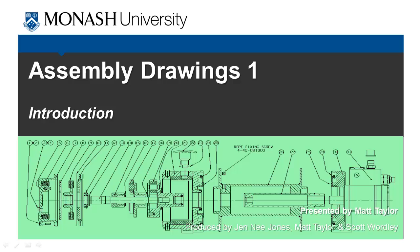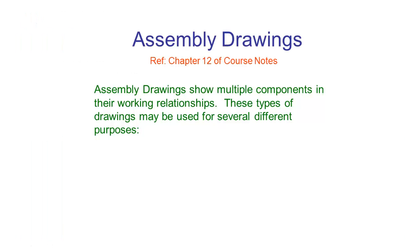Hi everyone, Matt here. In this next set of videos we are going to be taking a look at assembly drawings, and in this first video we're going to be looking at what assembly drawings are and why we produce them. Assembly drawings are a bit different to detailed drawings, and the main purpose of an assembly drawing is to show how multiple components assemble in their working relationships. There are several different ways these drawings can be used to achieve different purposes, and we're going to go through some of these purposes now.